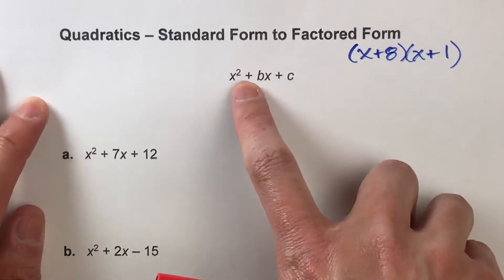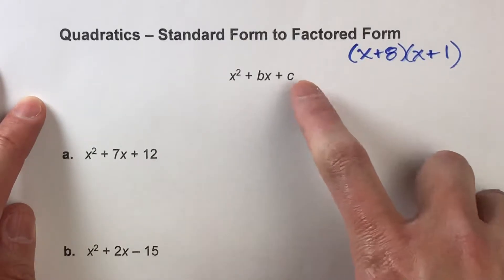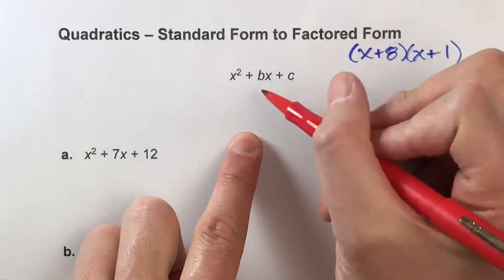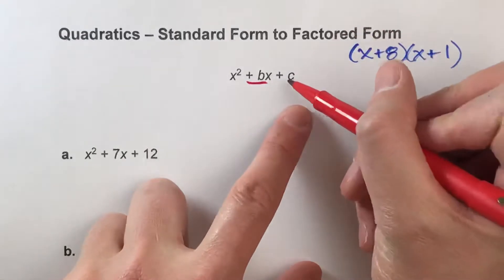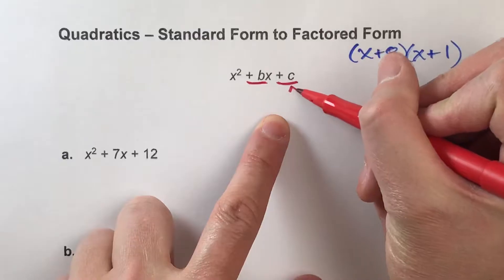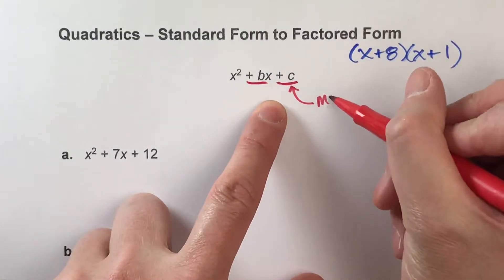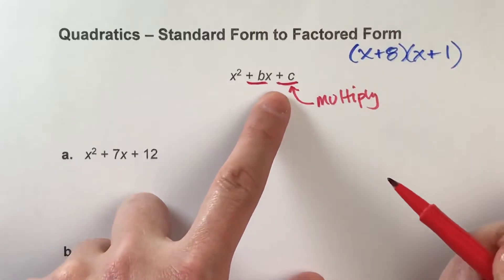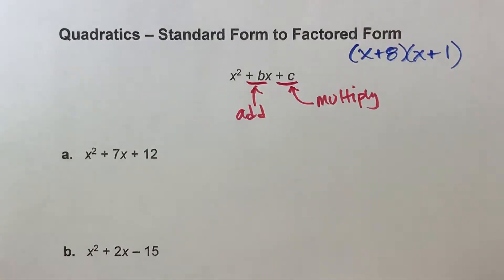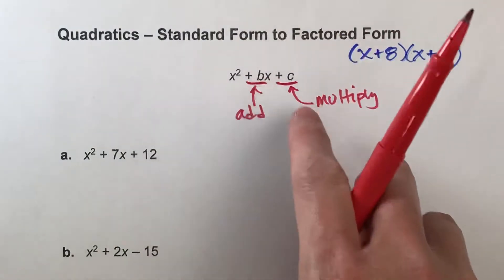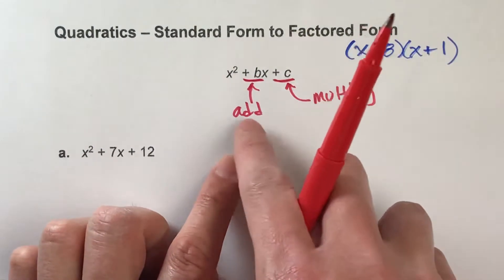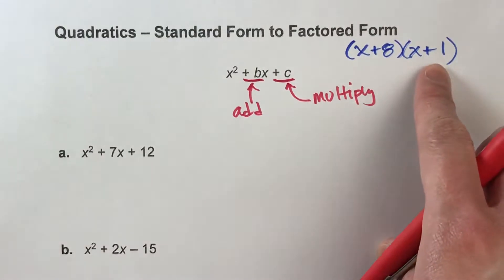When we have a quadratic written in standard form, figuring out how to get it into factored form is a little tricky. But here's the trick: you have to take a look at the coefficient next to x and the number added at the end. You want two numbers that multiply to get the number at the end, but when you add them together, you get the number next to x. It's really important to pay attention to the signs. Once you find those two numbers, they go into your factored form.